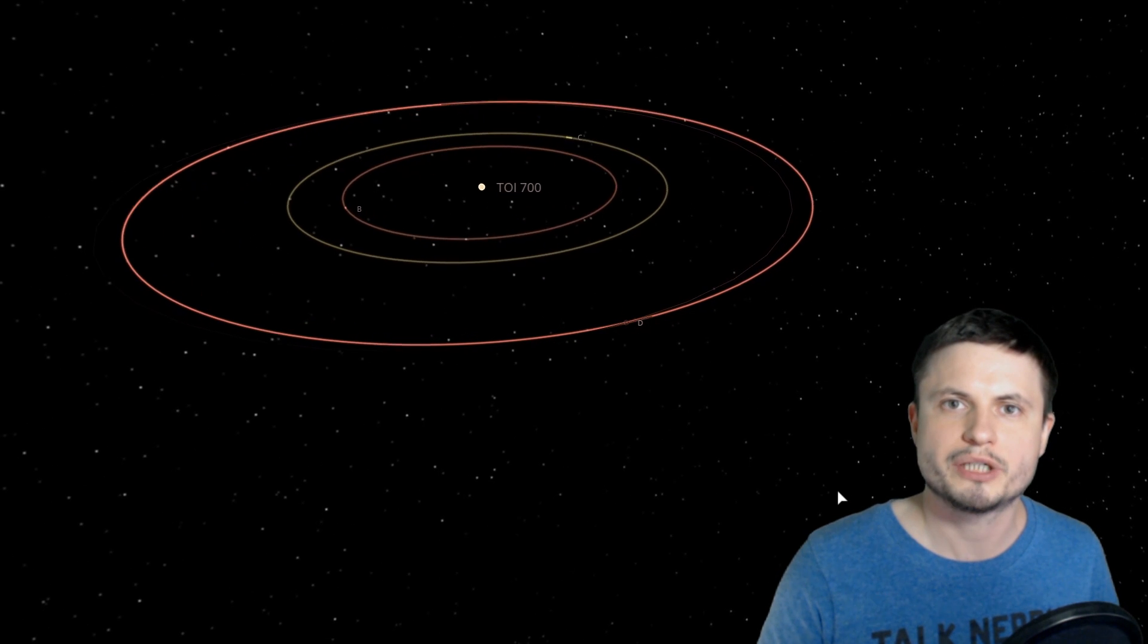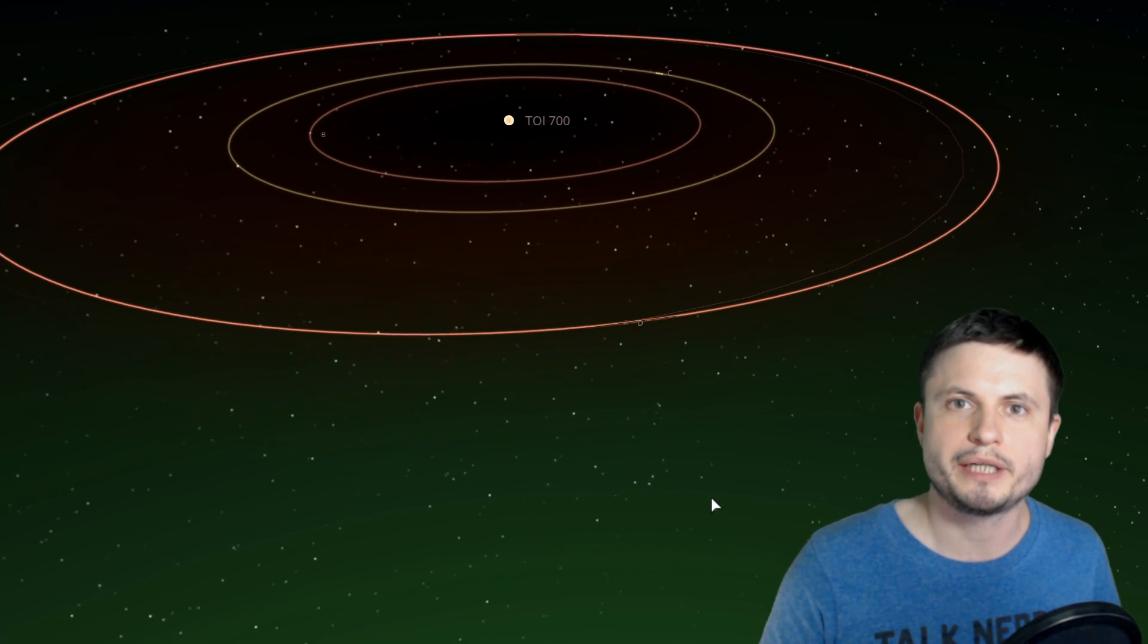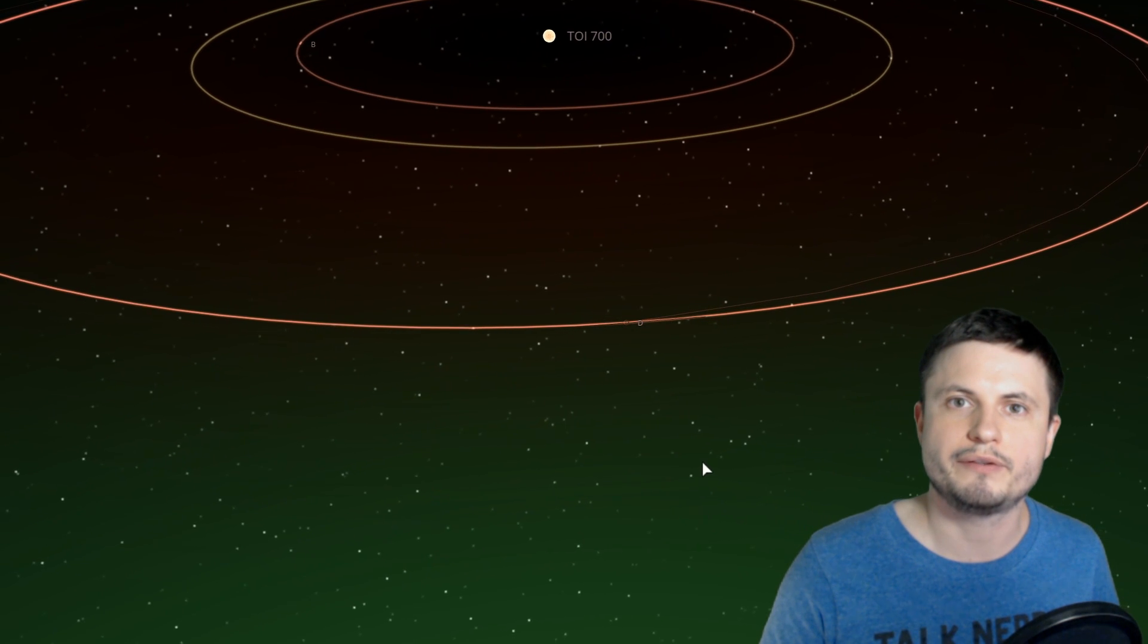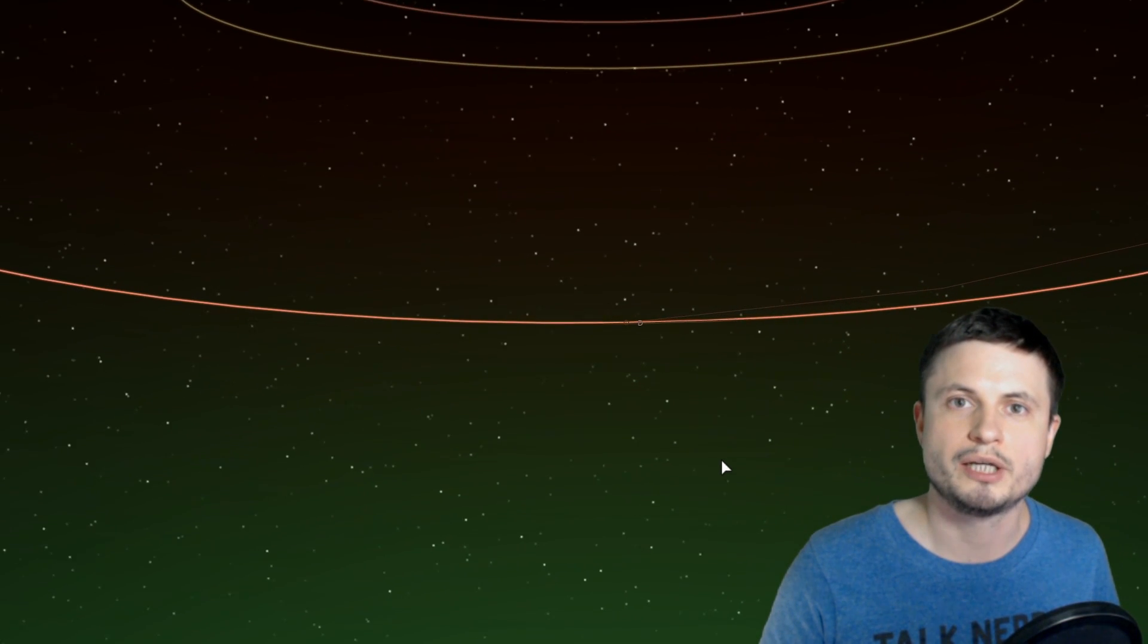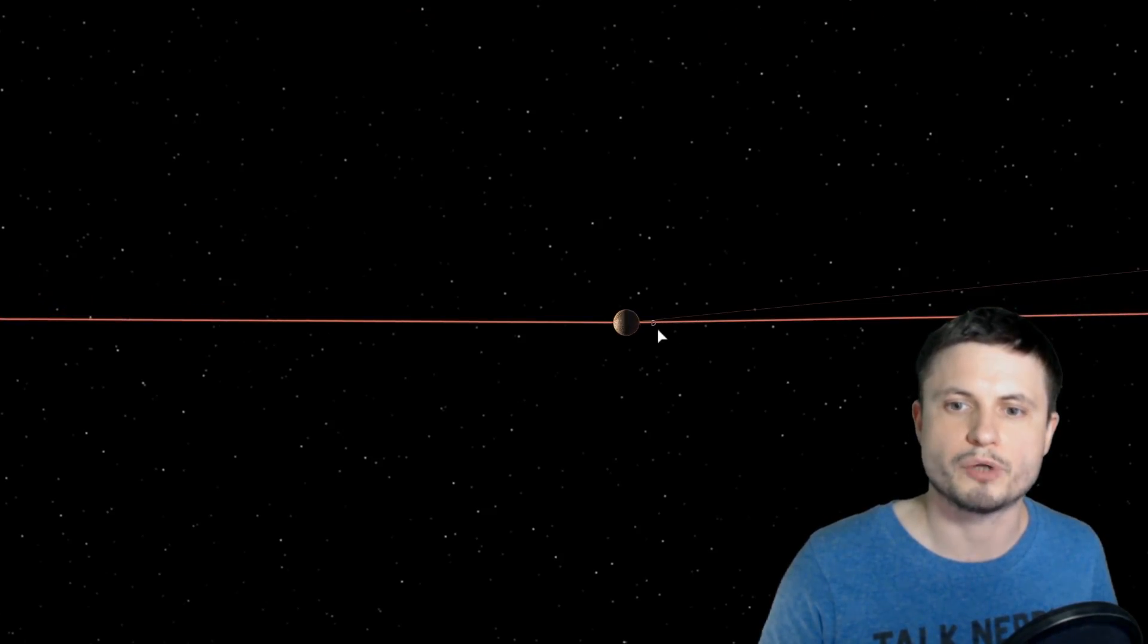And so really it's this last object here known as TOI 700D that seems to be located on the outskirts of the so-called habitable zone where liquid water could technically exist. That gives us the most promise.